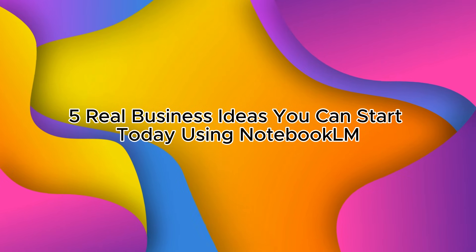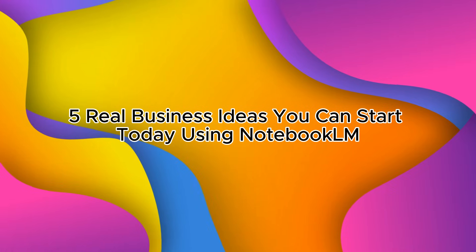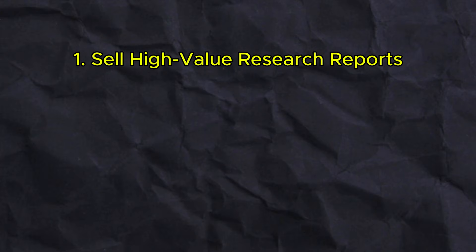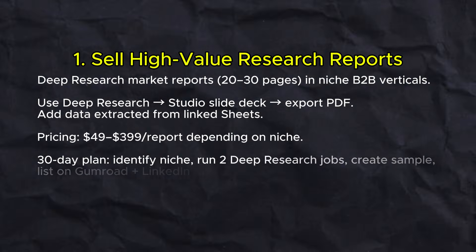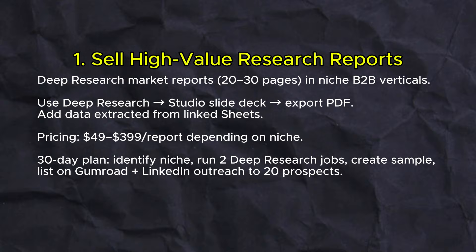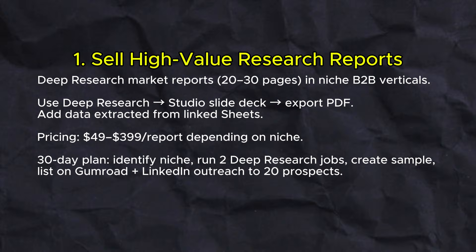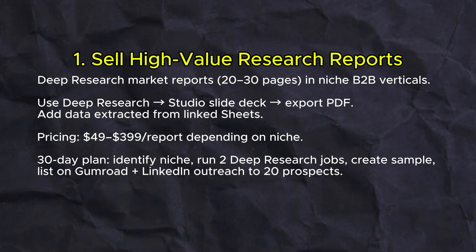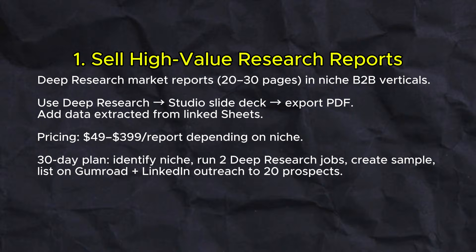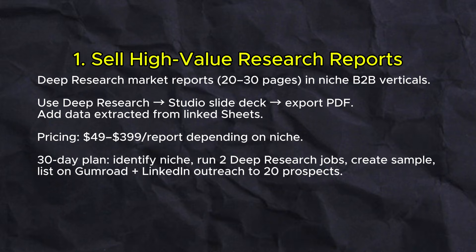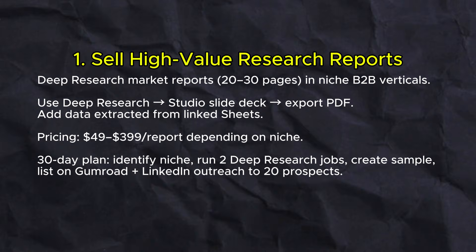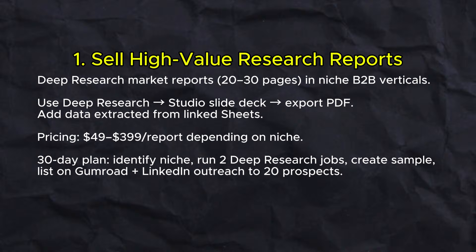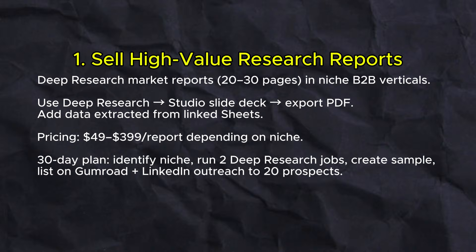Now let's look at five real business ideas you can start today using Notebook LM. The first is to sell high-value research reports — 20 to 30 page market reports in niche B2B verticals. Use deep research, studio slide decks, export PDF, and data extracted from linked sheets. Price these at $49 to $399 per report depending on niche. For a 30-day plan: identify the niche, run two deep research jobs, create a sample, then list on Gumroad plus LinkedIn outreach to 20 prospects.